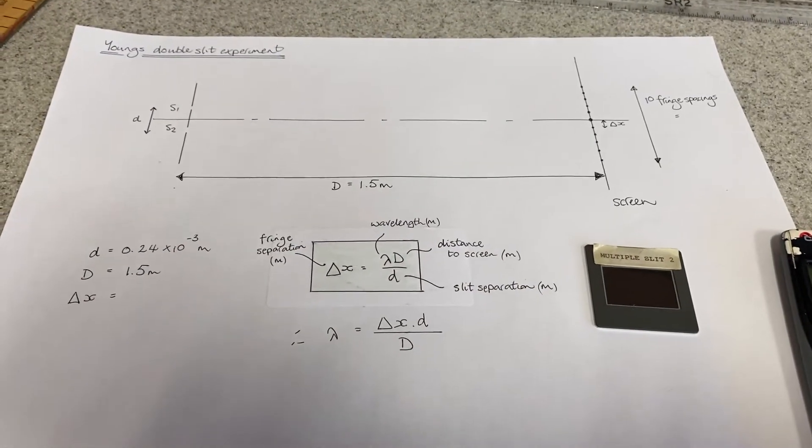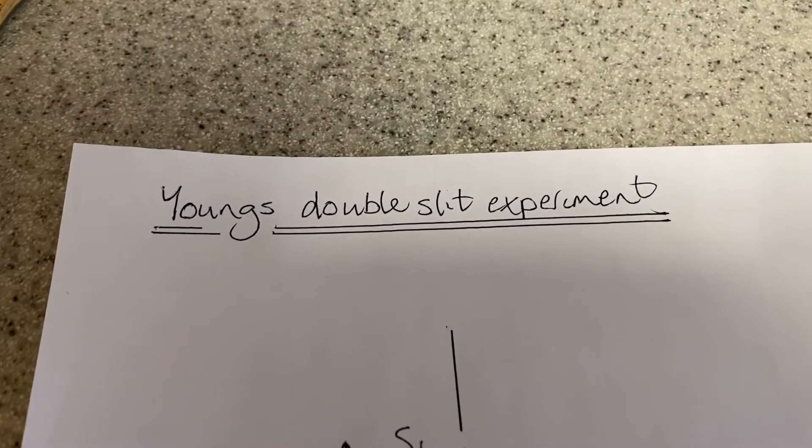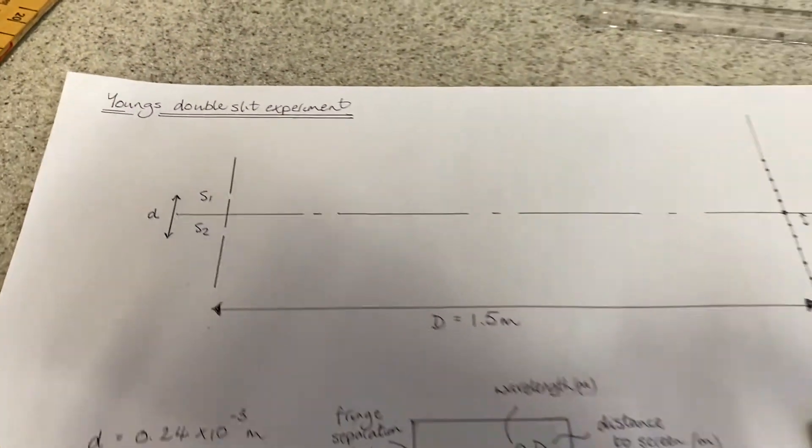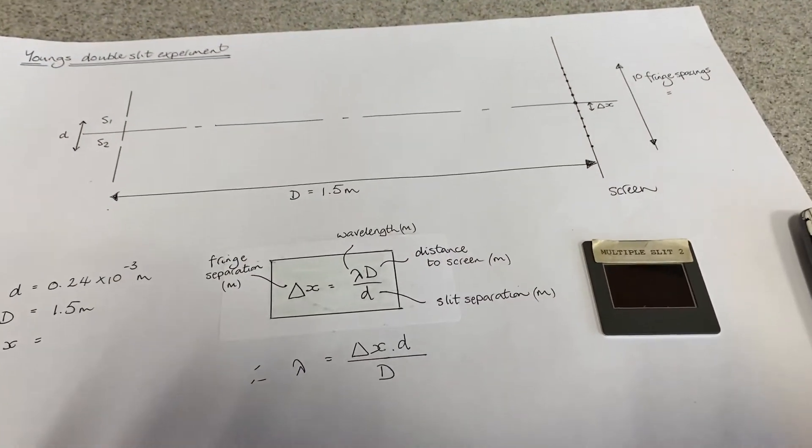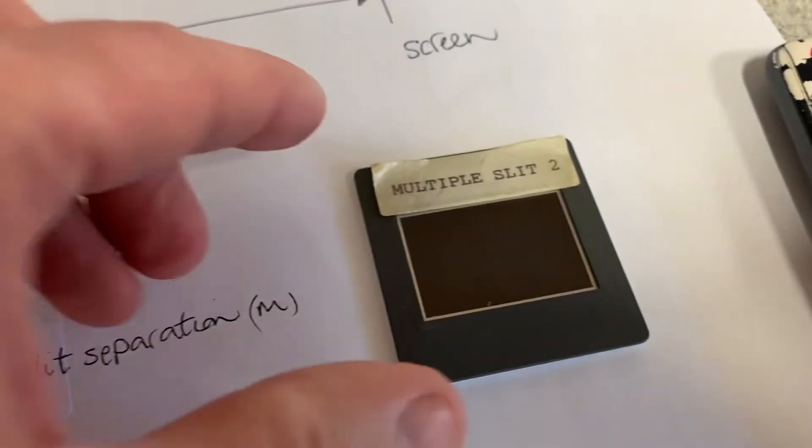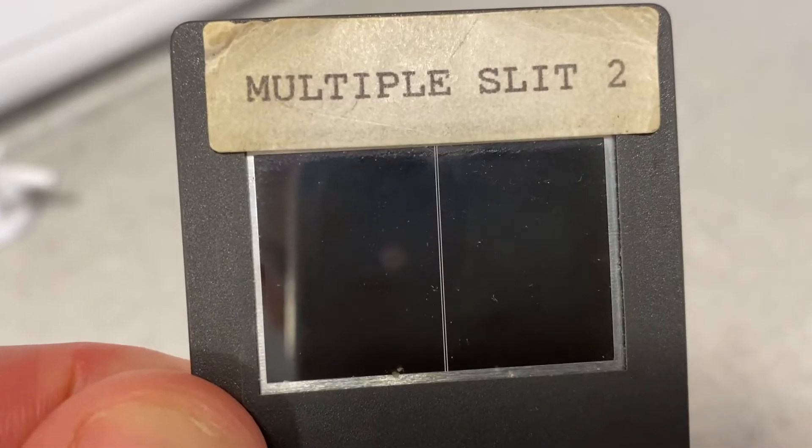OK troops, we're going to recreate Young's Double Slit experiment. I'm going to shine our laser through a double slit. That's a double slit there. There they are.